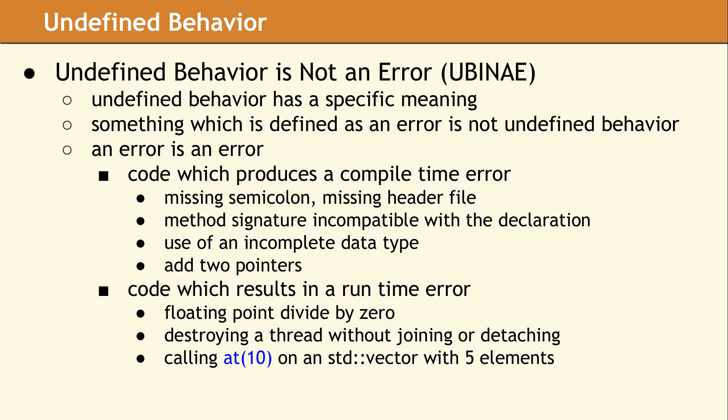If you attempt to divide by zero in integer arithmetic, you cannot check after the fact, because undefined behavior has already occurred. As another example, the 'at' method in std::vector does an internal check to verify if the index is valid. If it is out of bounds, an exception is thrown, which is a valid error and not undefined behavior.